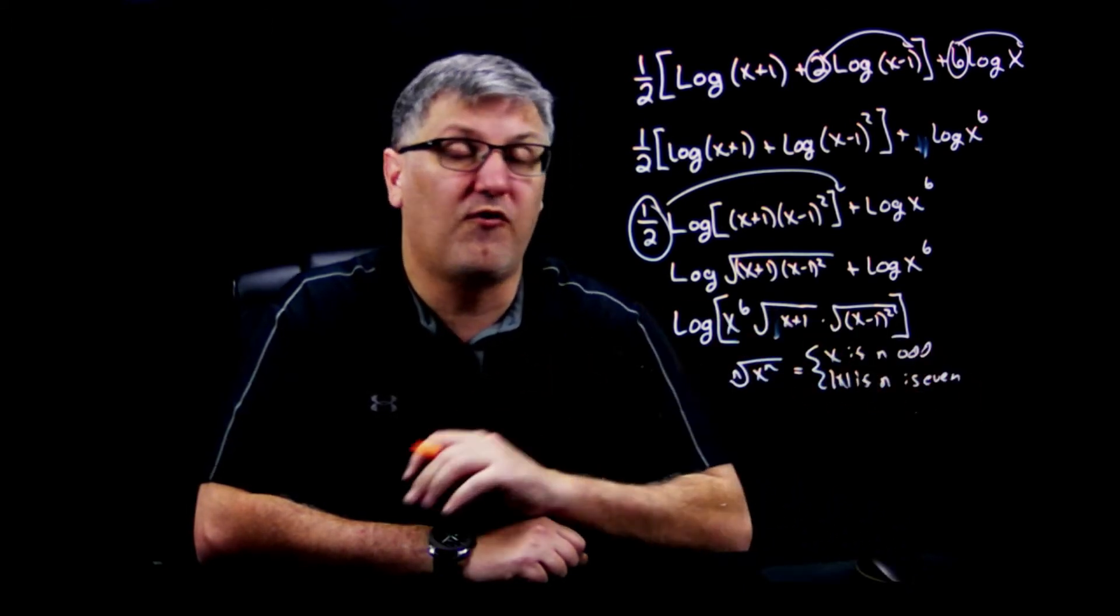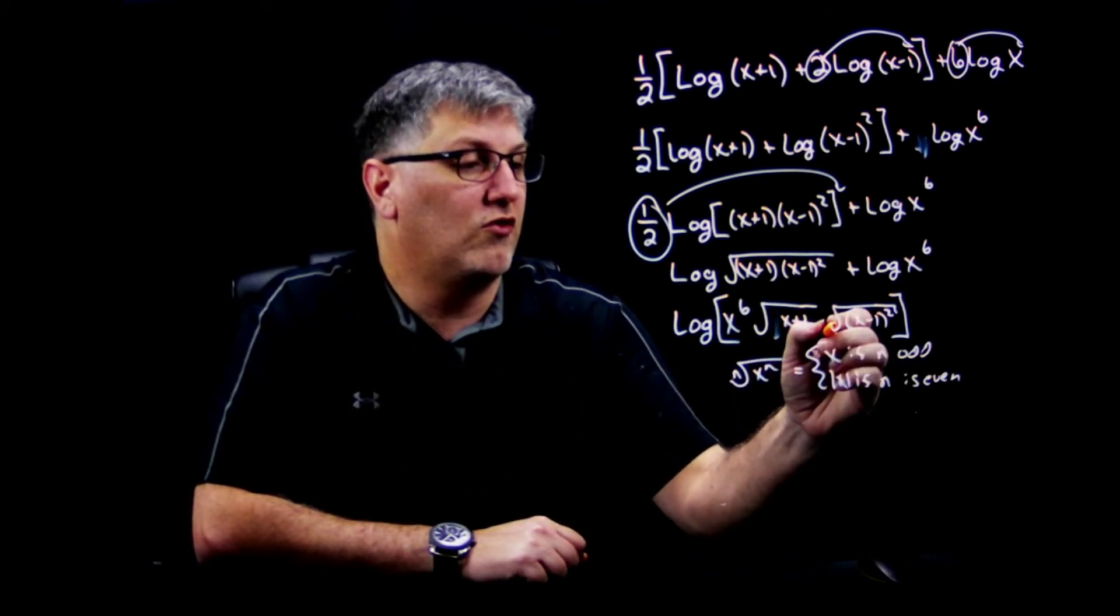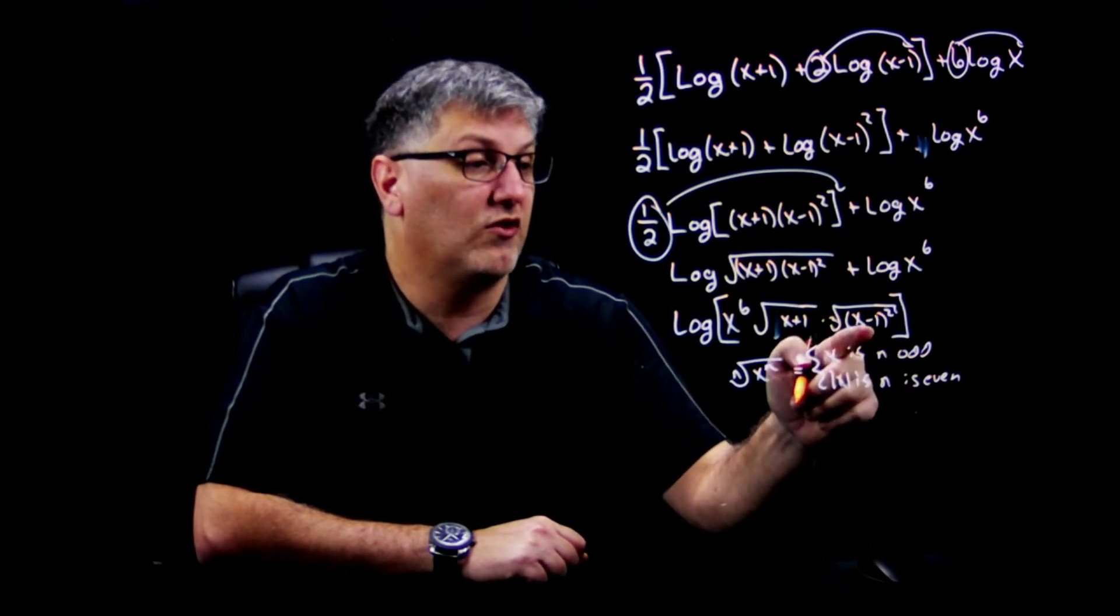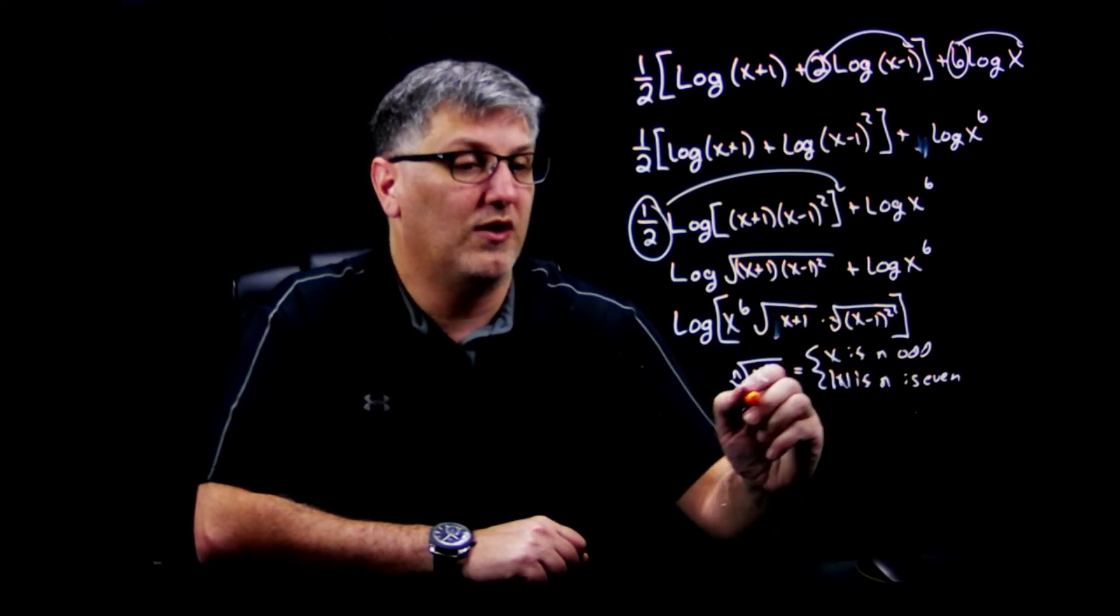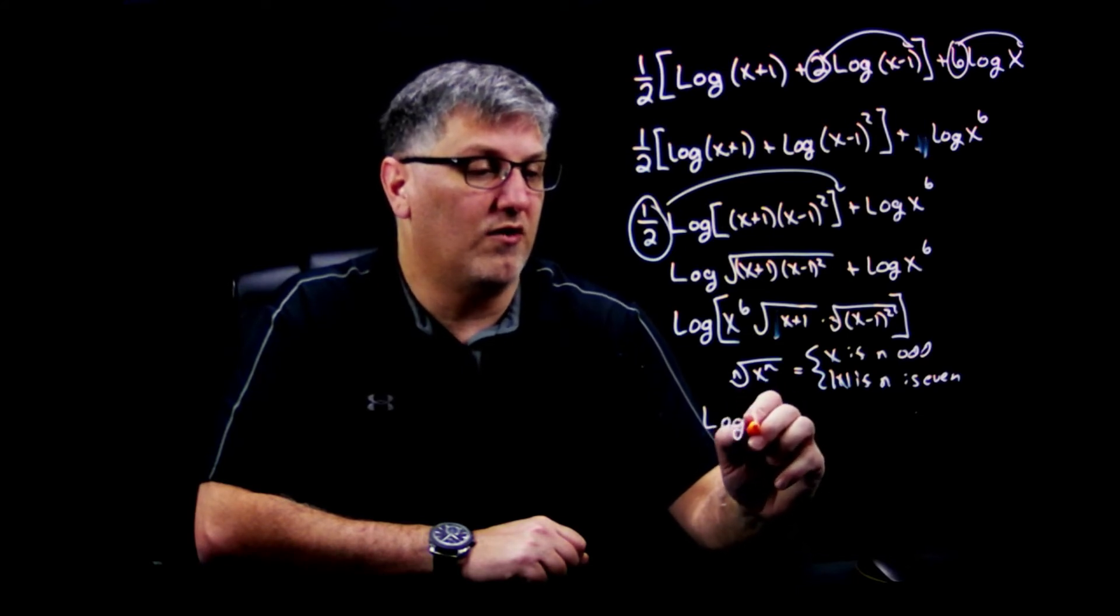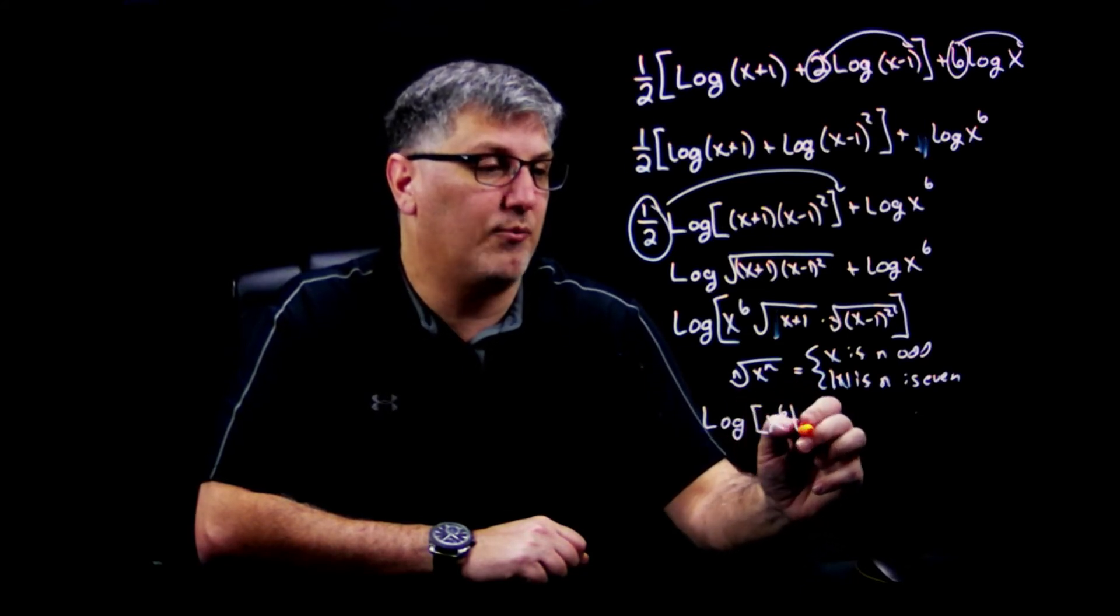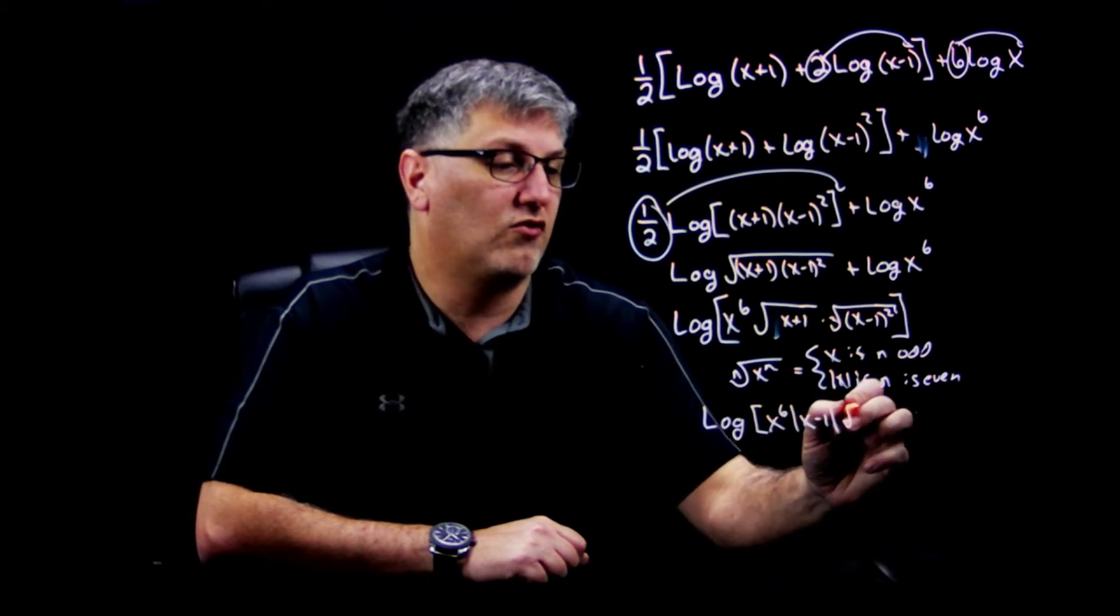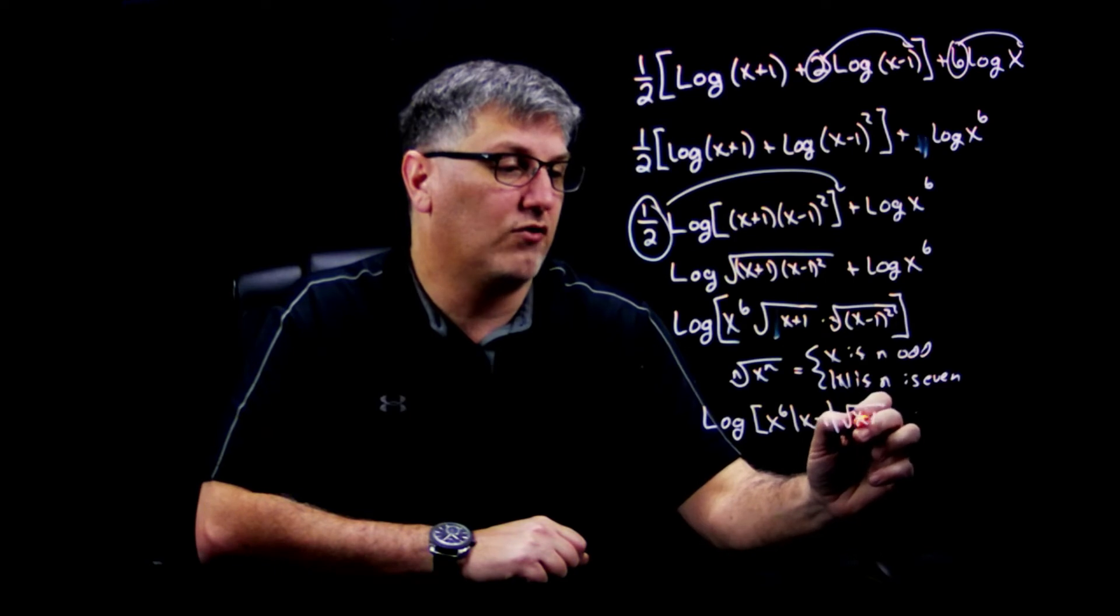So I can actually simplify this even more. So since here this is a 2, and this is a 2, my n is even, so this actually turns into the absolute value. So I would have the log of x to the 6th times the absolute value of (x-1) times the square root of (x+1).